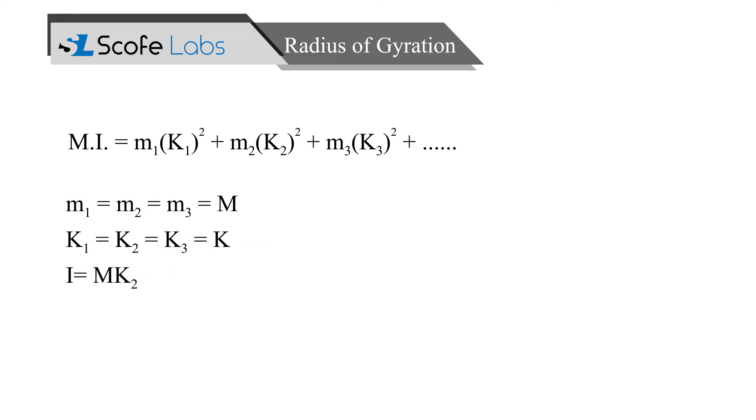Here, it is assumed that m1 is equal to m2 is equal to m3, and k1 is equal to k2 is equal to k3 is said to be k.